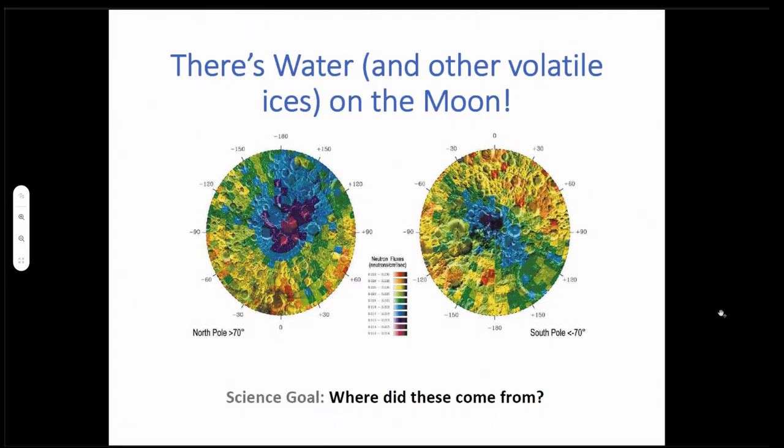Obviously, we're all here because we're excited about water and volatiles being present on the moon. And so the science goal that a lot of us would like to know is where did these come from?